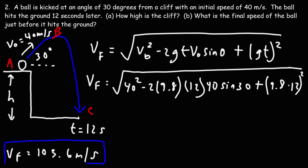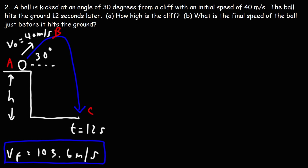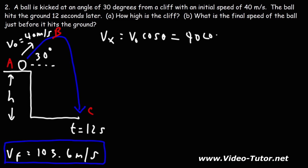You can find that formula in the formula sheet in the description below. Now let's confirm this answer using another method. Another way to find v_final is to find vx_final and vy_final separately. The good thing about vx is that for projectile motion there's no acceleration in the x direction, so vx at point A is the same as vx at point C. vx equals v_initial cosine theta, so that's 40 cosine 30, which gives us 34.64 meters per second.